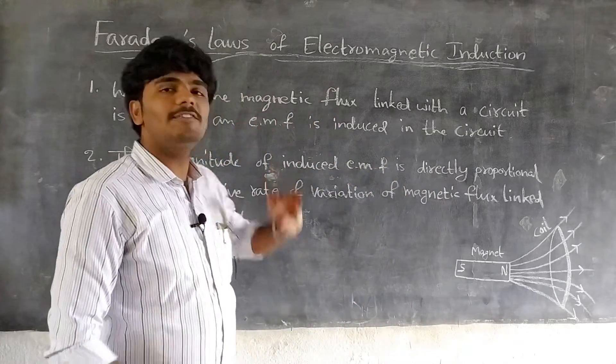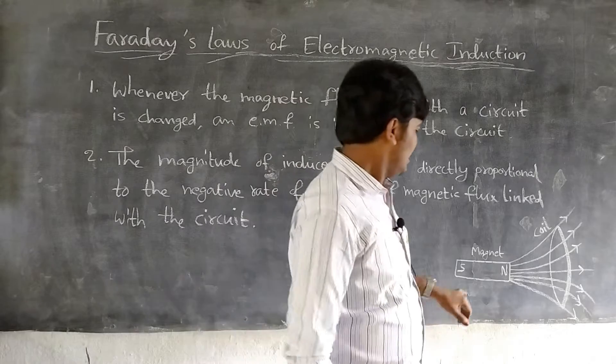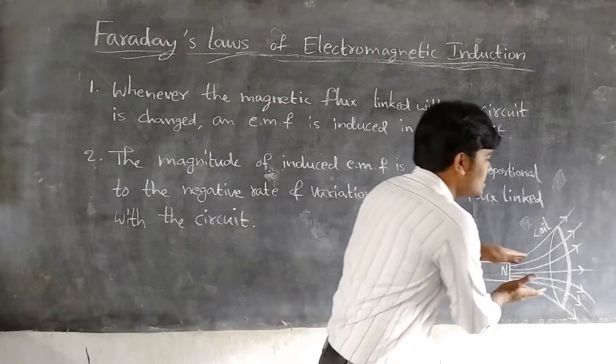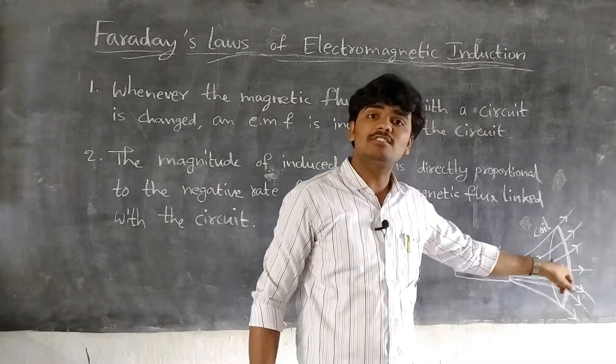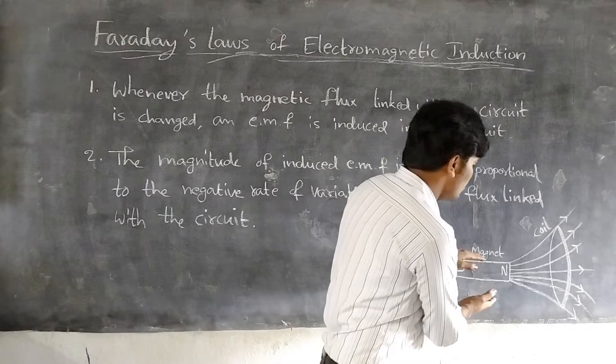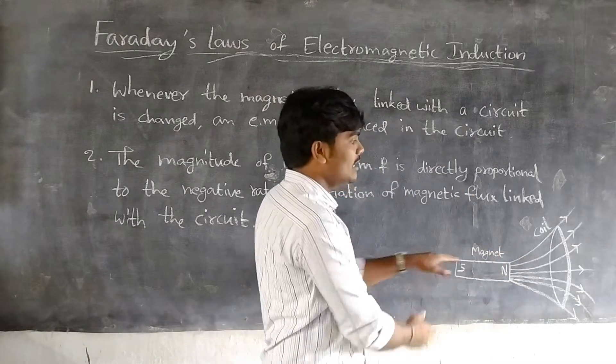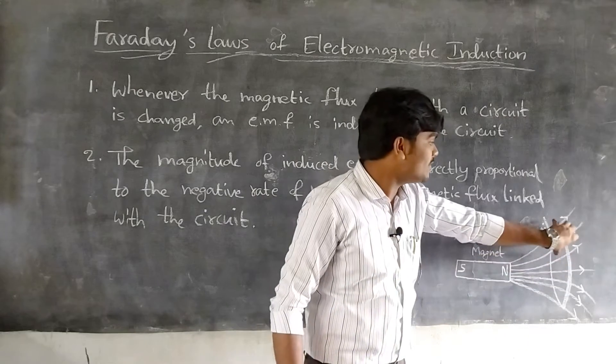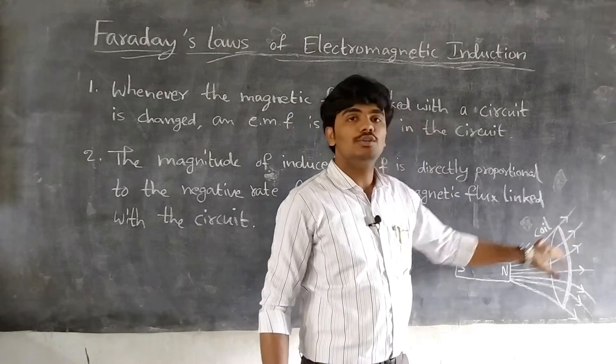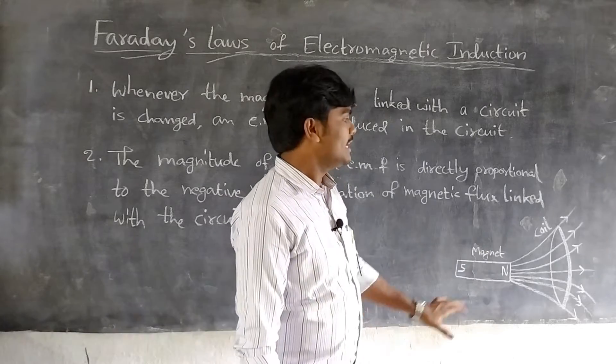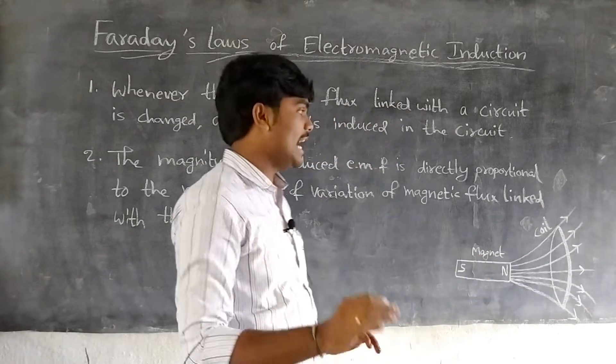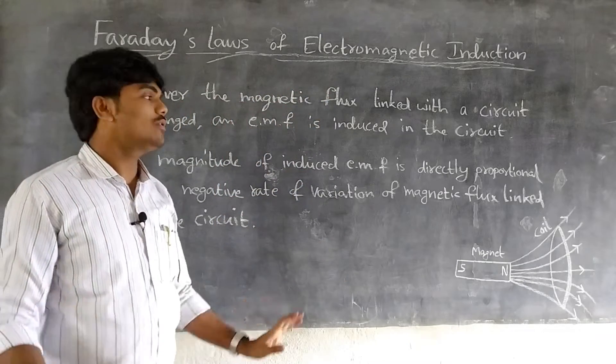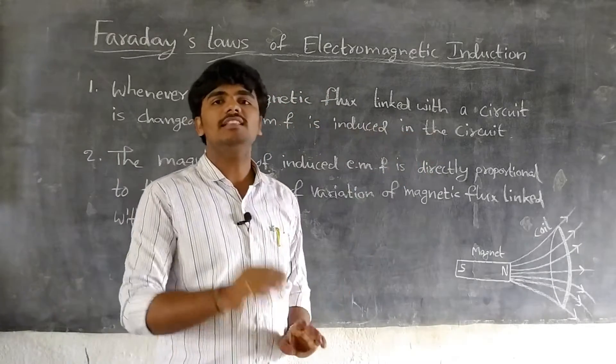So EMF creation - see here it is a magnet and this is the coil. When the magnet is moved towards the coil, the magnetic flux through the coil increases. When the magnet is moving away from the coil, the magnetic flux decreases. In both cases, an EMF is obtained in the coil during the motion of the magnet. So EMF is created. This is the first law.